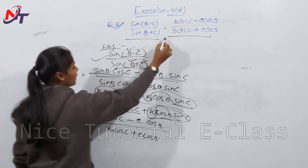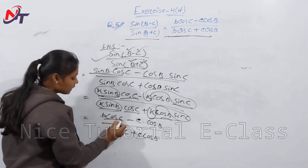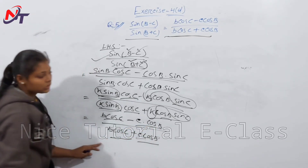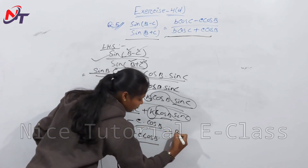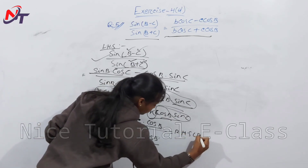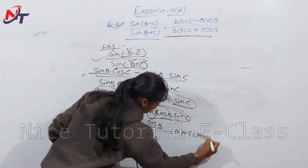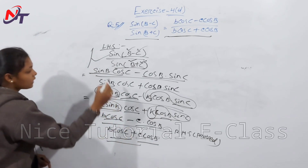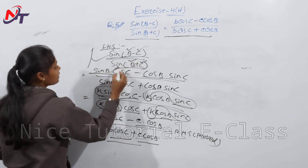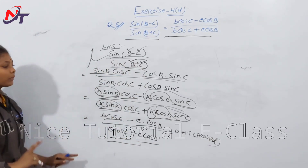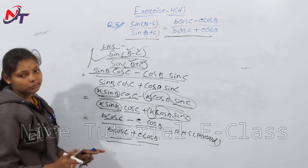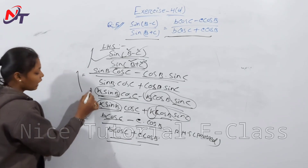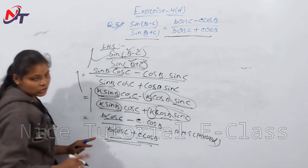This matches the RHS exactly: (b cosC − c cosB) / (b cosC + c cosB). Therefore LHS = RHS, and the identity is proved using the sin(A ± B) expansion and the sine rule formula.